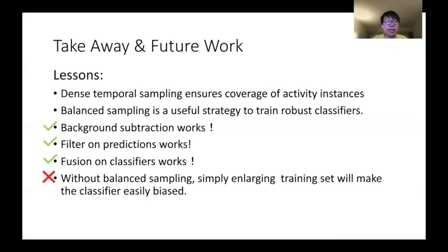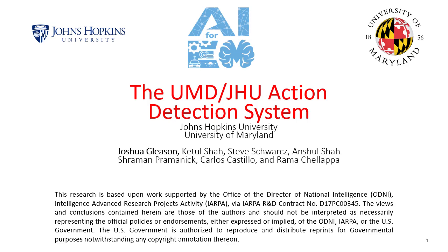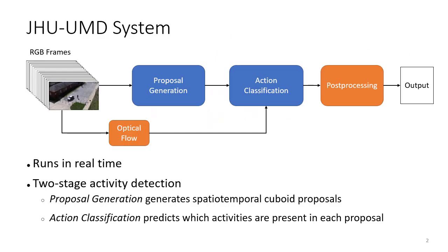Here are some takeaways and lessons we learned through this year's challenge. Thanks all for listening. Next up is the system paper from UMD-JHU delivered by Josh Gleason. For our real-time action detection system, we use a two-stage approach. In the first stage, we quickly produce action proposals to reduce the large spatiotemporal search space by pruning regions of the video where we can quickly say that actions are not occurring. In the second stage, we process the proposals with more care, predicting which activities are present in each proposal. This system is an extension of the system we presented at the HAD-CV 2020 workshop, so we will focus primarily on improvements since then.